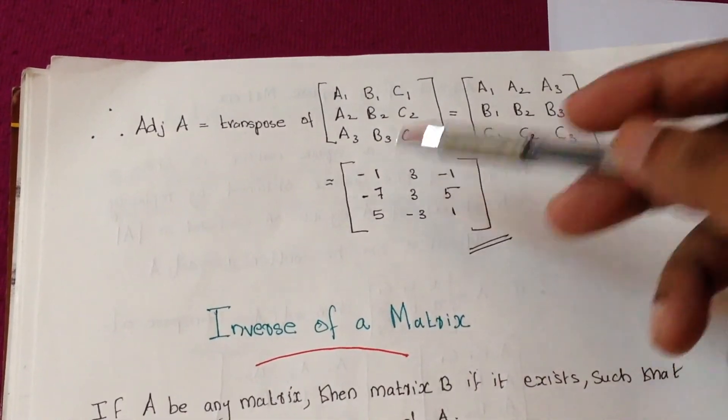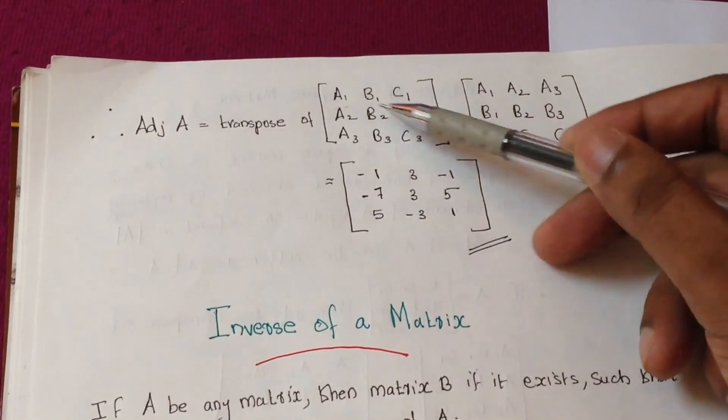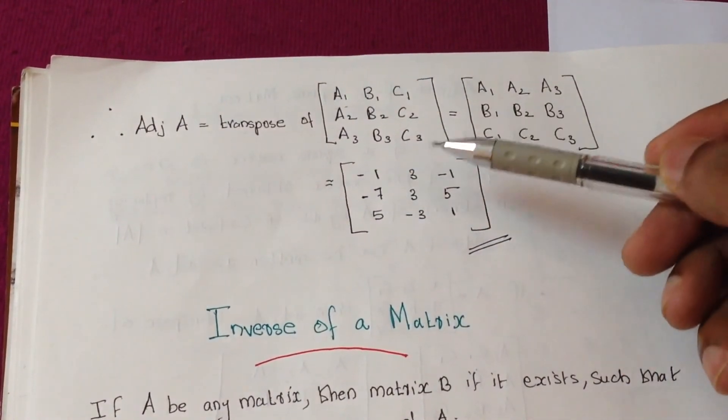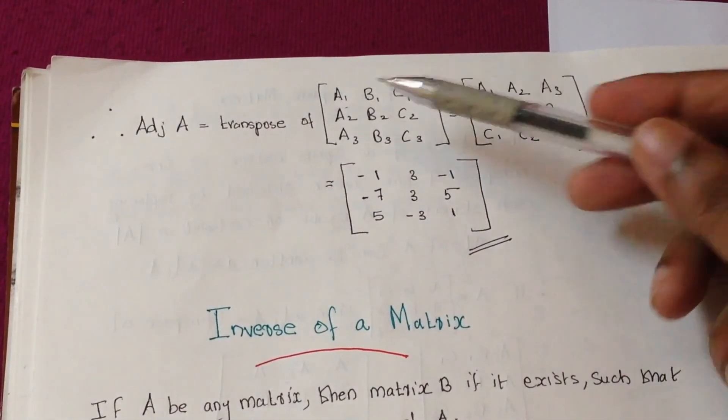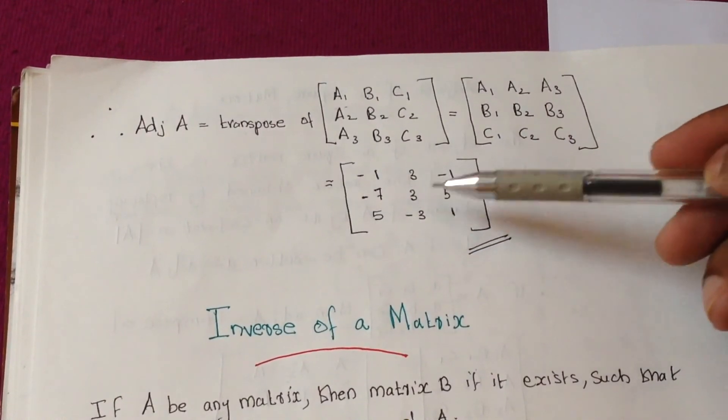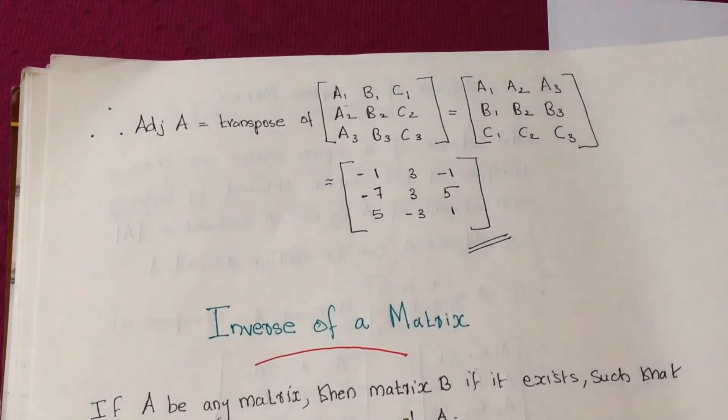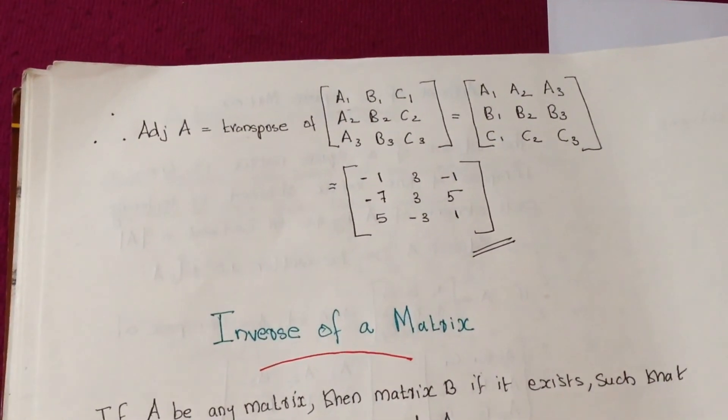Whatever cofactors we get, we'll take the transpose. So it will come like minus 1, 3, minus 1, minus 7, 3, 5, 5, minus 3, 1. This is the method of finding the adjoint of a matrix.